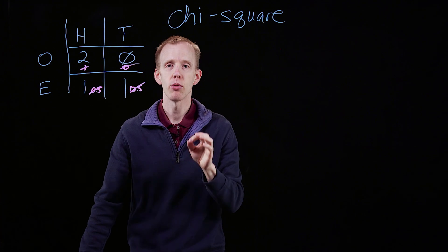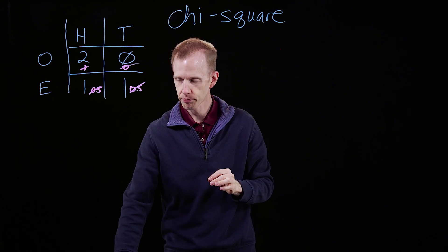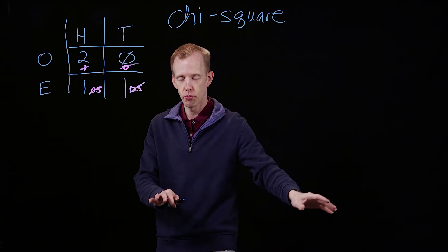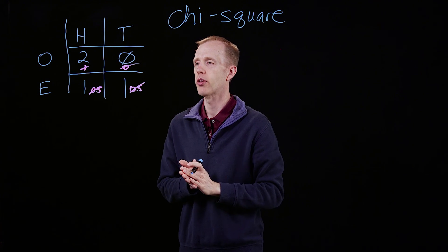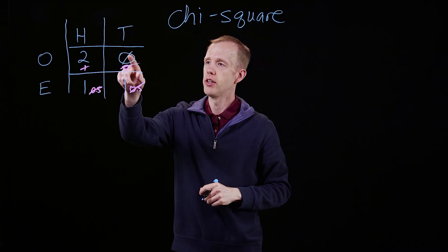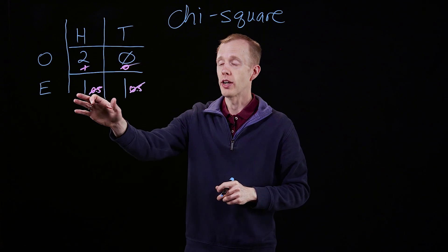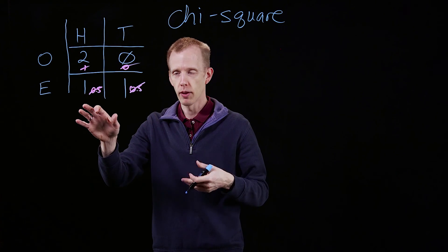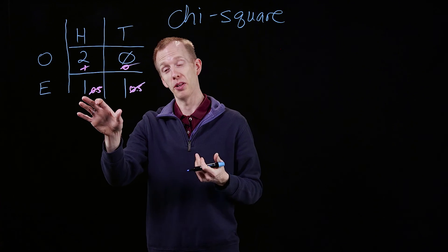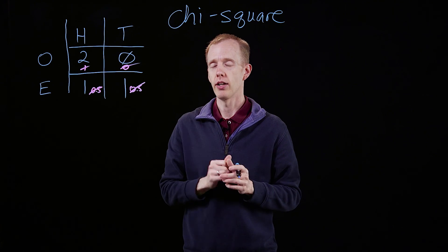This has to be just numbers of observations, not then turned into frequencies, percentages, and so forth. So two heads and zero tails observed. We expect, then, if coin flipping is random and this coin really does have heads and tails, one heads and one tails.